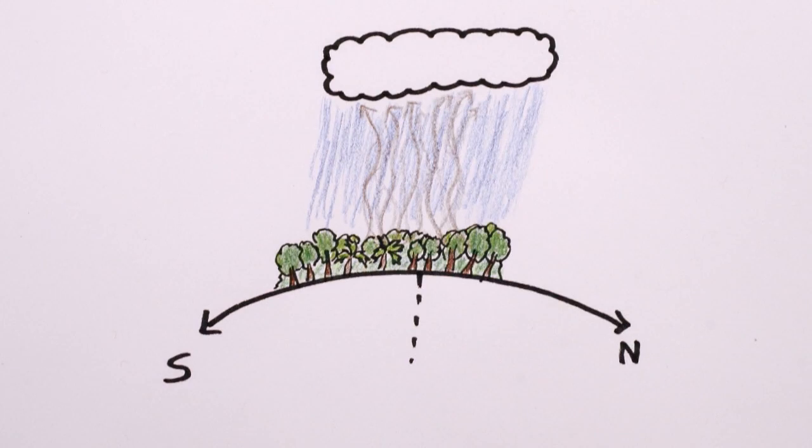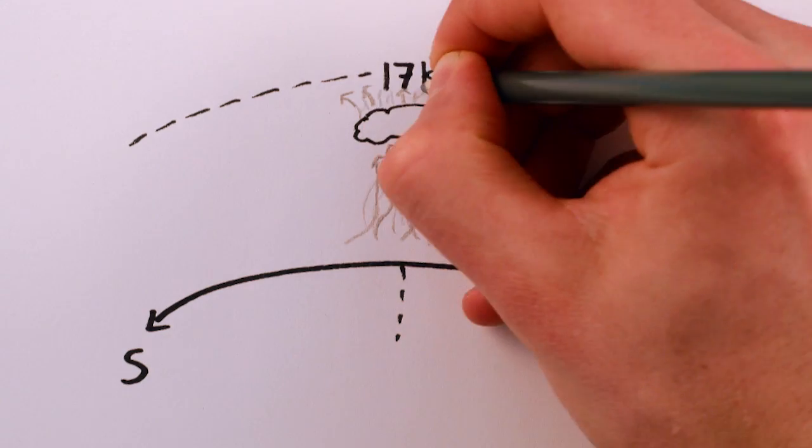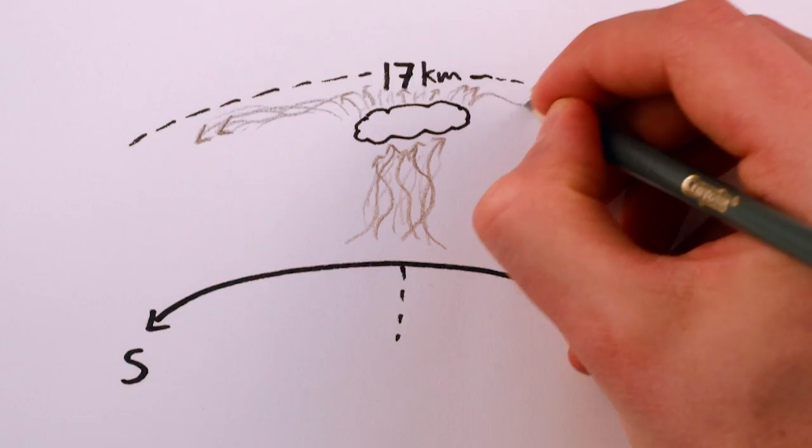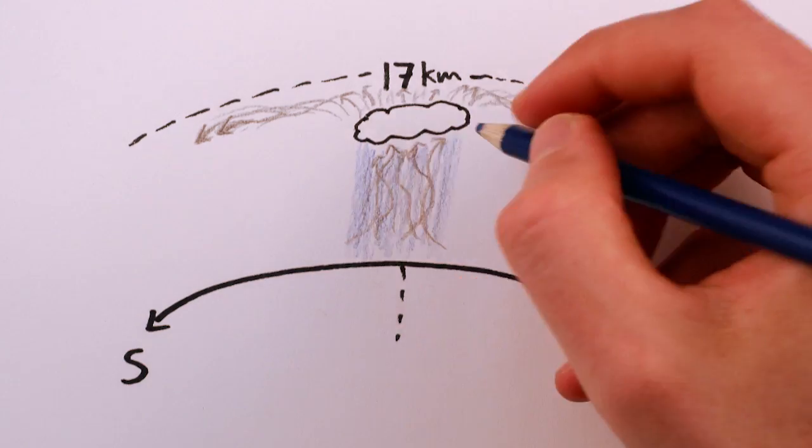After reaching an altitude of about 17 kilometers, the rising and drying air hits the stratosphere, which acts kind of like a ceiling, causing the warm air to spread out and separate. Some goes north, some south. As the air leaves the equator, it rains away more moisture, becoming denser and slightly cooler.